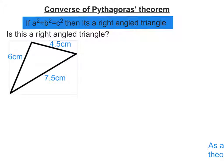So here we've got an example. We've got a triangle here, 6 centimeters, 4.5 centimeters, 7.5 centimeters, and it wants us to prove if it's a right-angled triangle. So what I'm going to do is work out what A squared plus B squared is and hope that's the same as C squared.